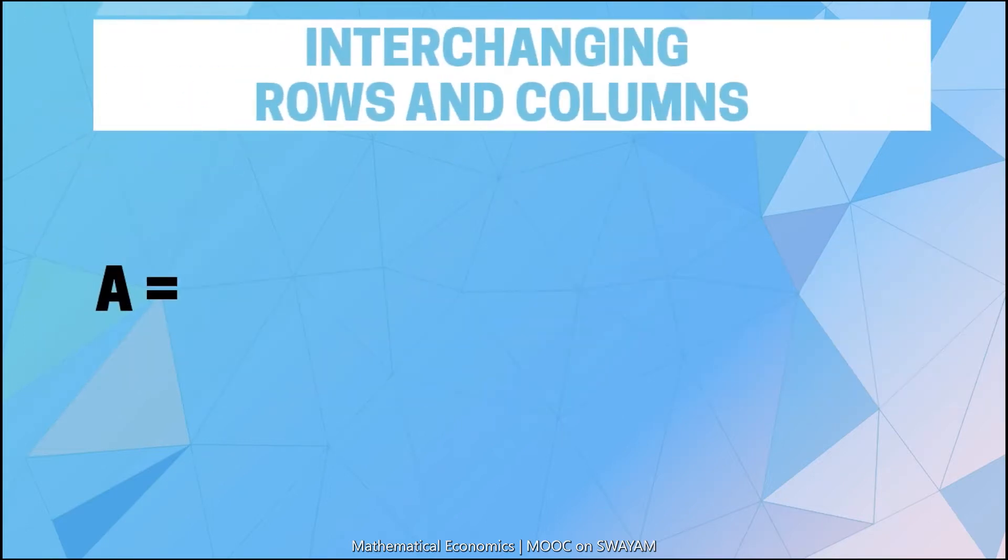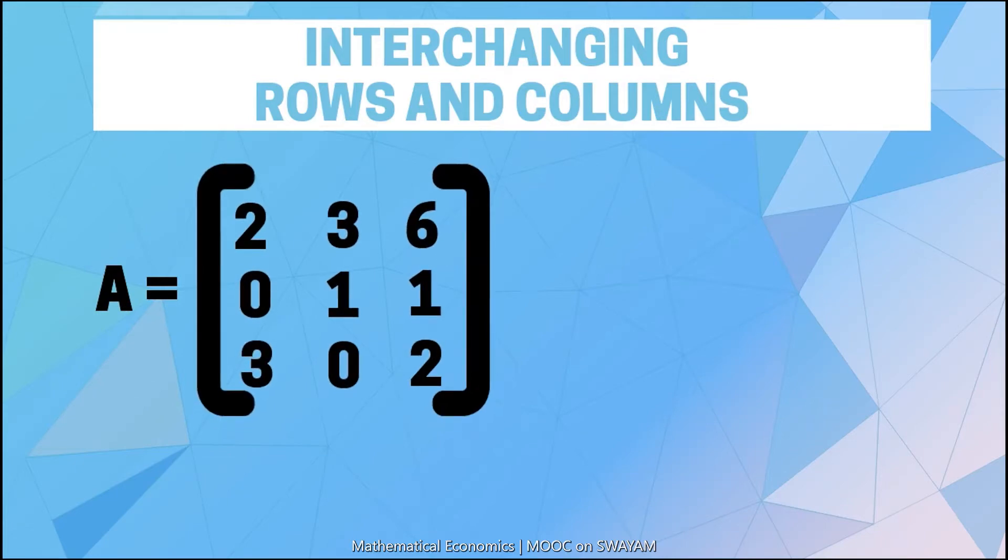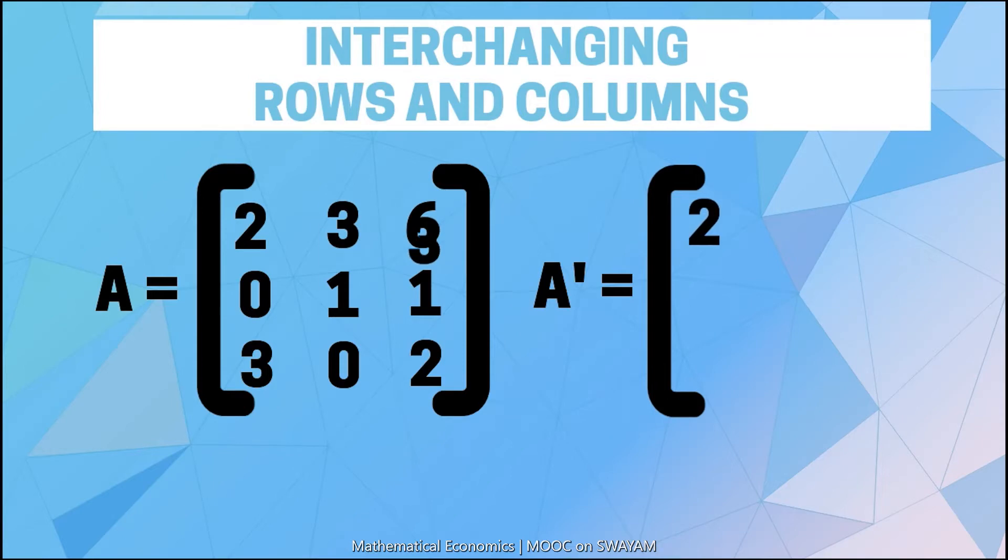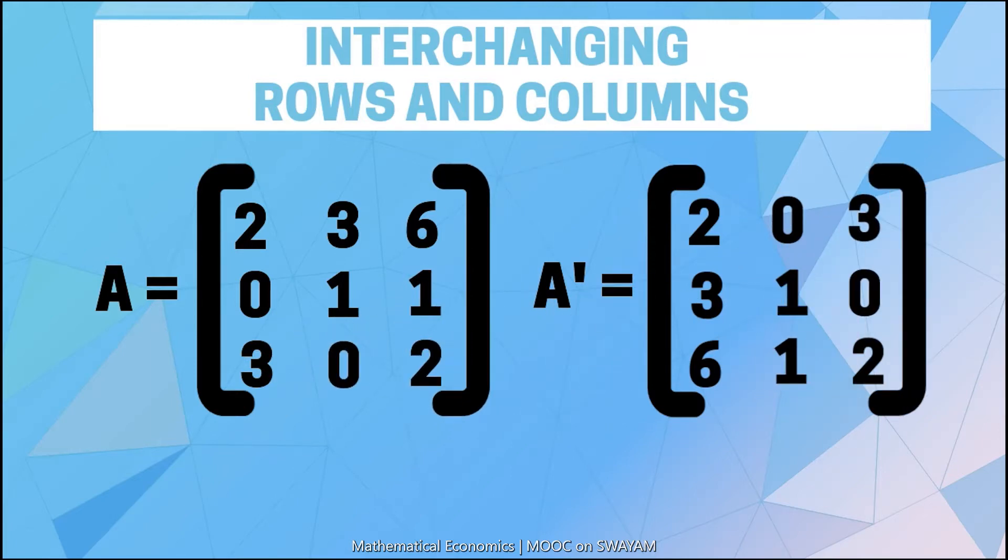If A is a matrix of order 3 by 3 and we transpose the matrix, the elements in the first row take the place of the first column. The elements in the second row take the place of the second column, and the elements in the third row take the place of the third column. The order, however, remains the same as 3 by 3.